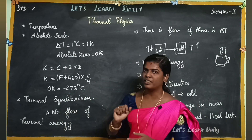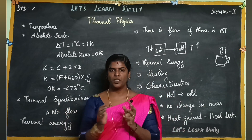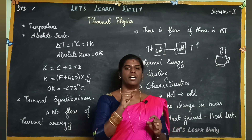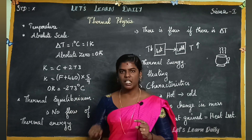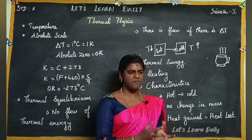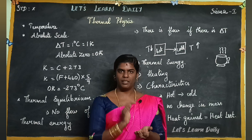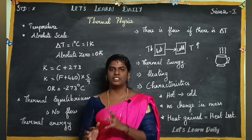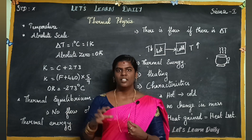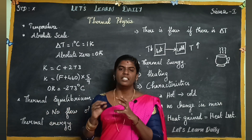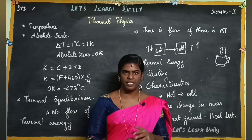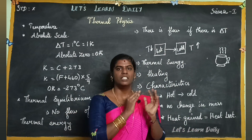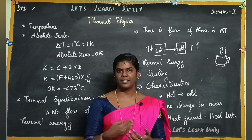Temperature indicates the degree of hotness or coldness. When heat energy is higher, the temperature is higher. When heat energy is minimum, it is a cold region — the temperature will be minimum. Temperature is a scalar quantity, and the unit is Kelvin.